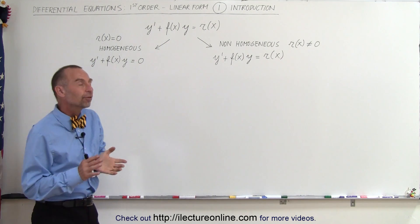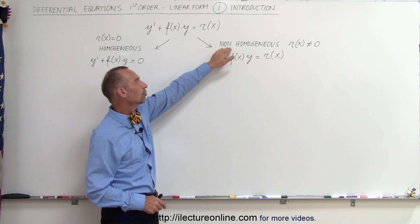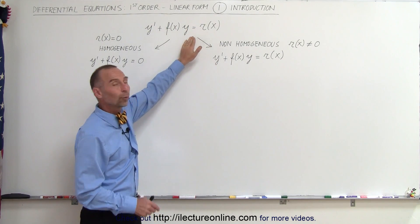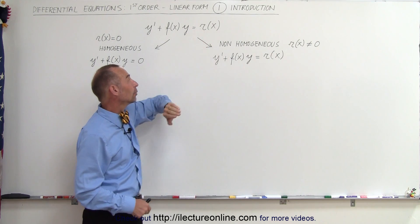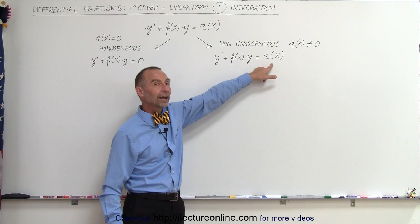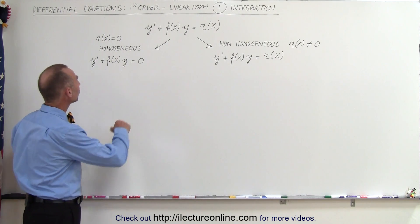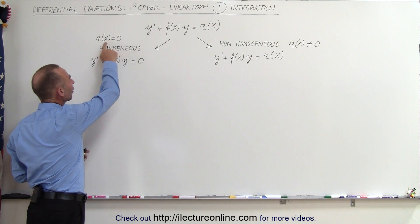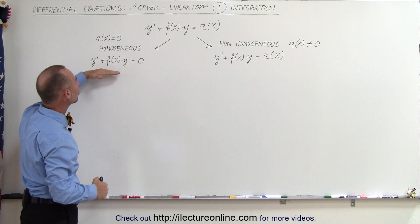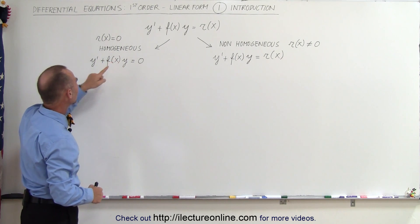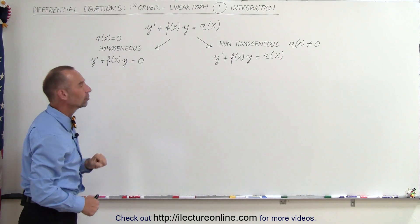There are two forms of this equation: the homogeneous form and the non-homogeneous form. The equation as written is already the non-homogeneous form, where on the right side of the equal sign we have a function of x, so r(x) is not equal to zero. When r(x) is equal to zero, we call it a homogeneous equation, and the equation looks like this: y' plus some function of x times y equals zero.